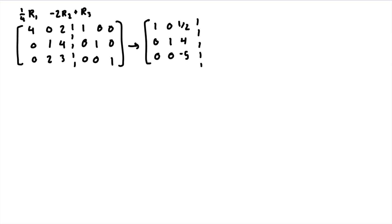Now onto the right side. The first row is divided by 4, so it becomes 1/4, 0, 0. The second row does not change. The third row becomes 0, then negative 2 times 1 is negative 2, plus 0 is negative 2, and 1.